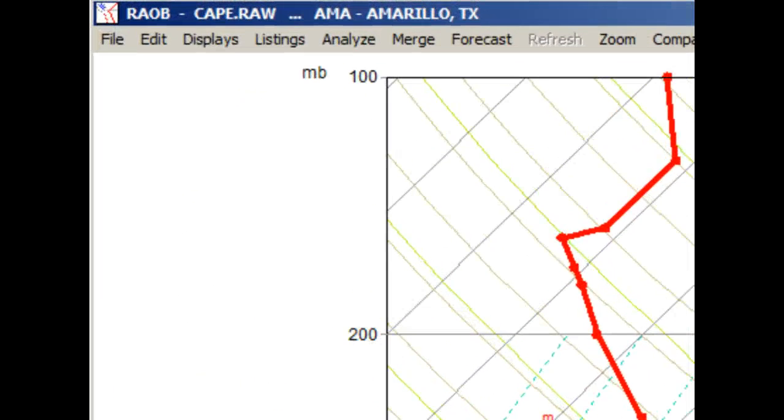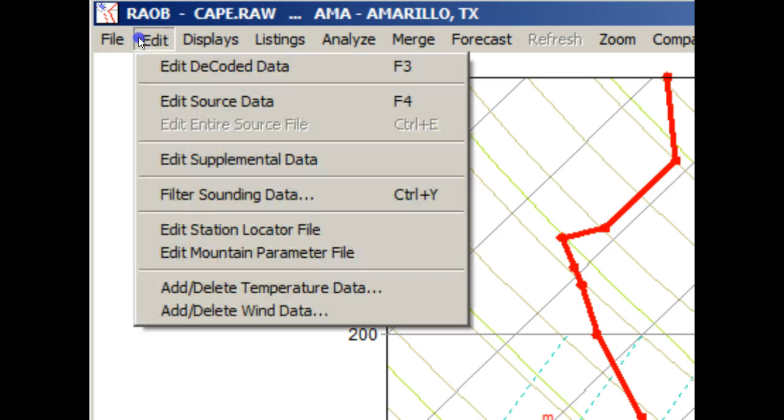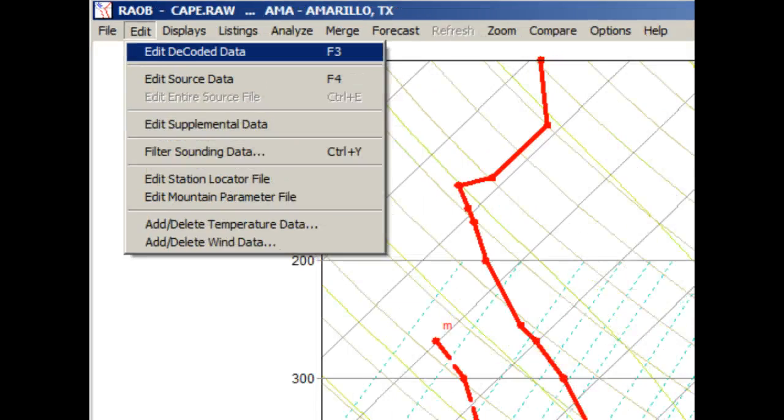RAOB even has a special data editor for its raw data format. To access this editor, just select the Edit menu and then the Edit Decoded Data option.